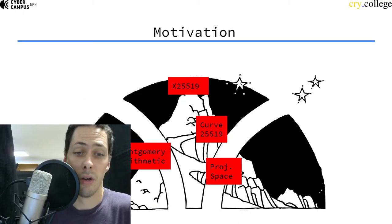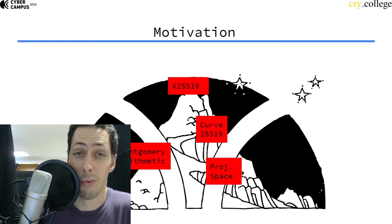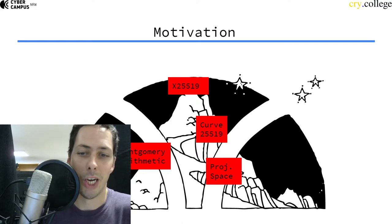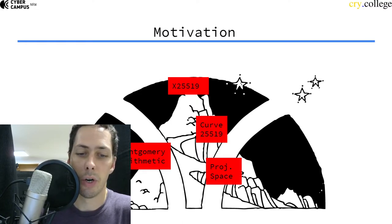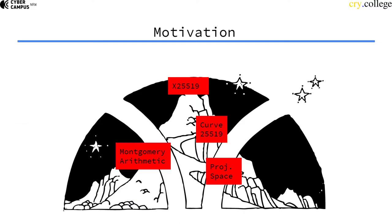This week we're gonna first look at a somewhat abstract topic: projective spaces. Then we're gonna go into details of Montgomery arithmetic and then climb the hill up to reach the famous curve 25519 and see why it has become so popular recently. And then at the end of the week,